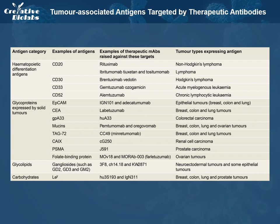Tumor-associated antigens recognized by therapeutic monoclonal antibodies fall into several different categories. Hematopoietic differentiation antigens are glycoproteins usually associated with cluster of differentiation groupings and include CD20, CD30, CD33, and CD52. Cell surface differentiation antigens are a diverse group of glycoproteins and carbohydrates found on the surface of both normal and tumor cells.